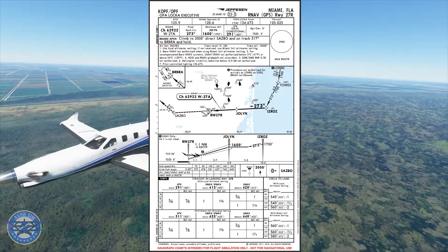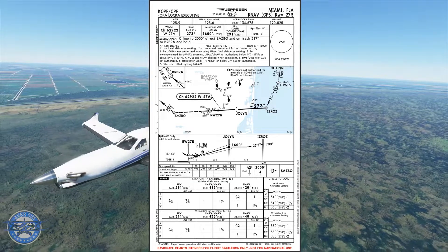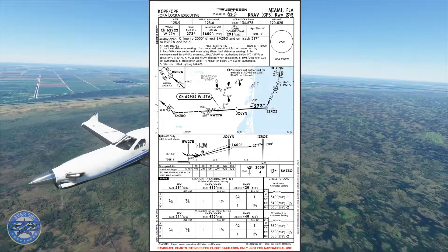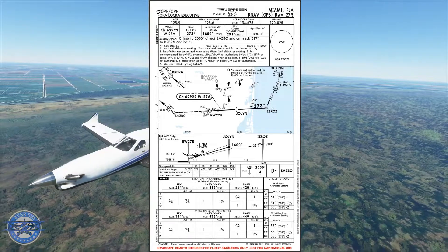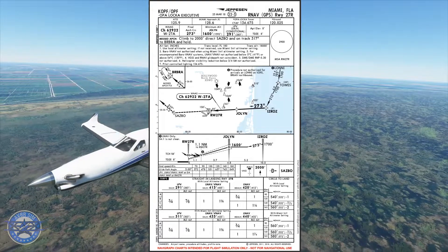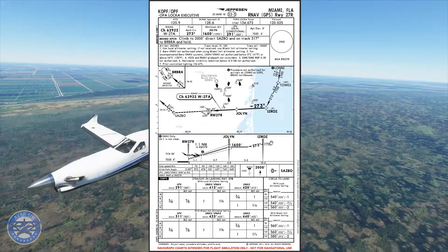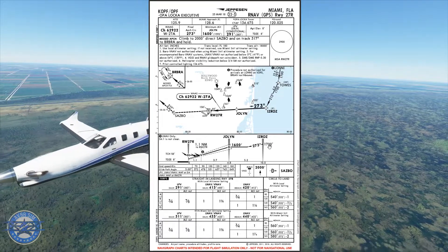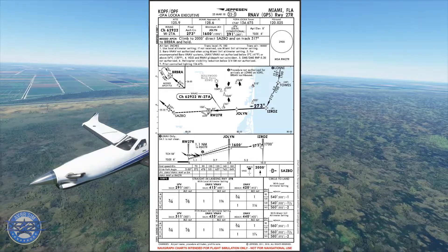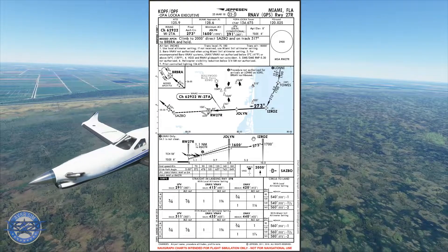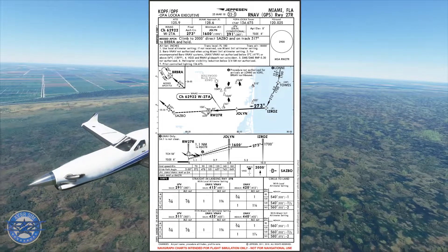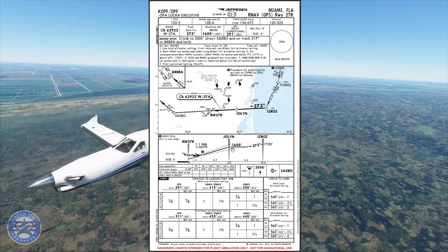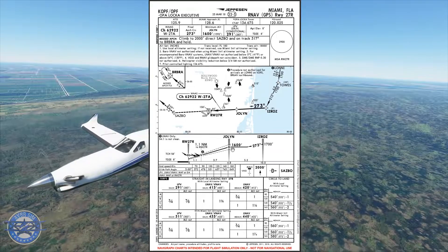Let's take a quick look at the approach plate for RNAV runway 27 right. Up in the top right corner we have Opa-locka, the airport we're flying to. They want us to come in at ISRAZ at 1700 feet — it's okay to come in a little under, so I'm going to come in at about 1600 feet. Then I'll proceed on to JOELIN, and from JOELIN I should have the airport in sight, disconnect the autopilot, and hand-fly it down to the runway.